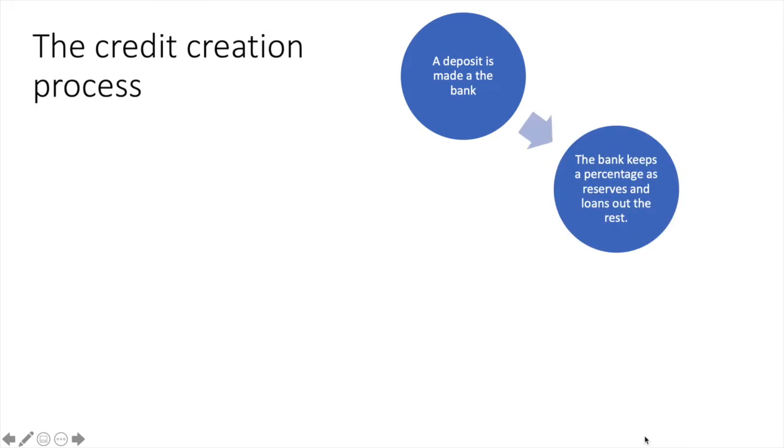Before we get into it, let's take an overview of the credit creation process. In order to have an understanding of this process, you first need to follow how deposits turn into loans at a bank. First, a deposit is made at a commercial bank. If a customer makes a deposit, the bank is liable to that customer for that amount, therefore a customer deposit is a liability of the bank. The bank does not hold on to all of the cash in the deposit — it keeps a percentage of the cash deposit as what is called a reserve.